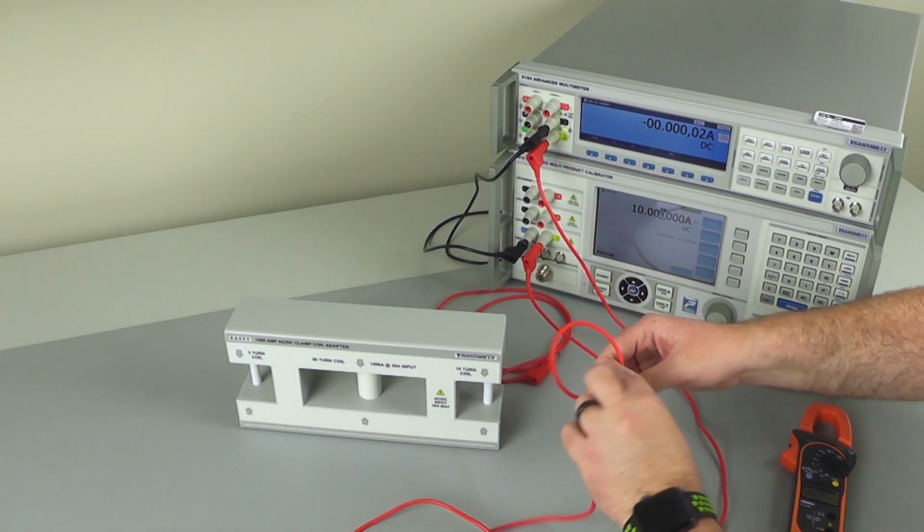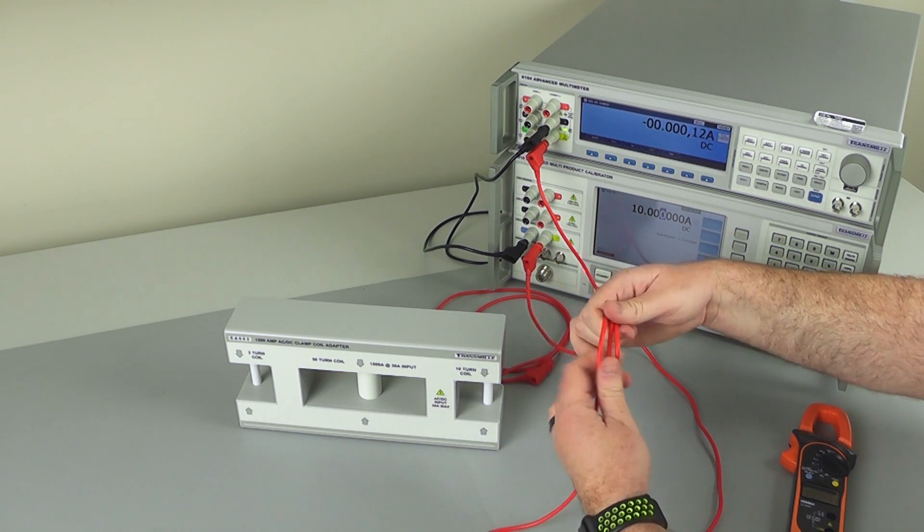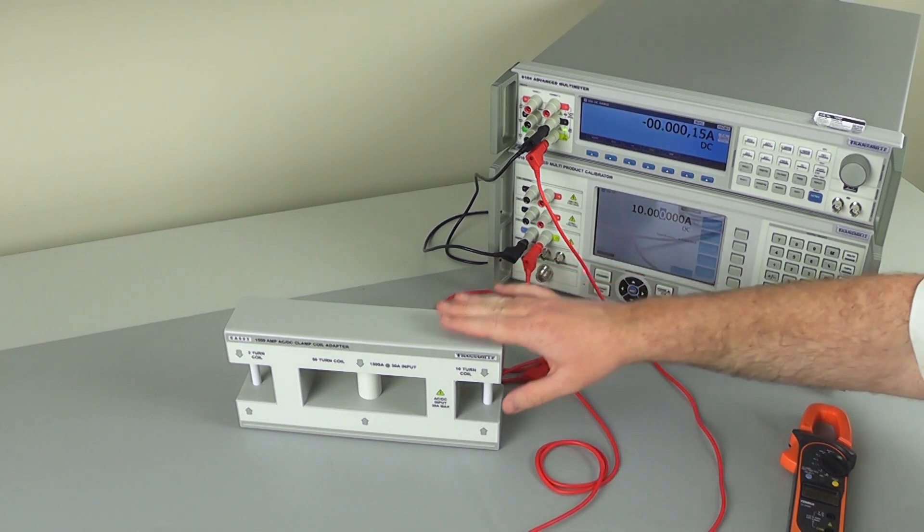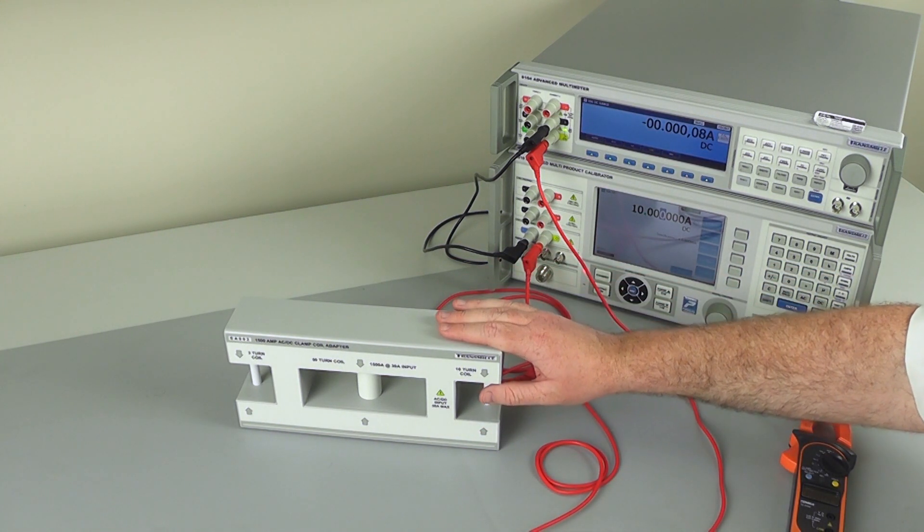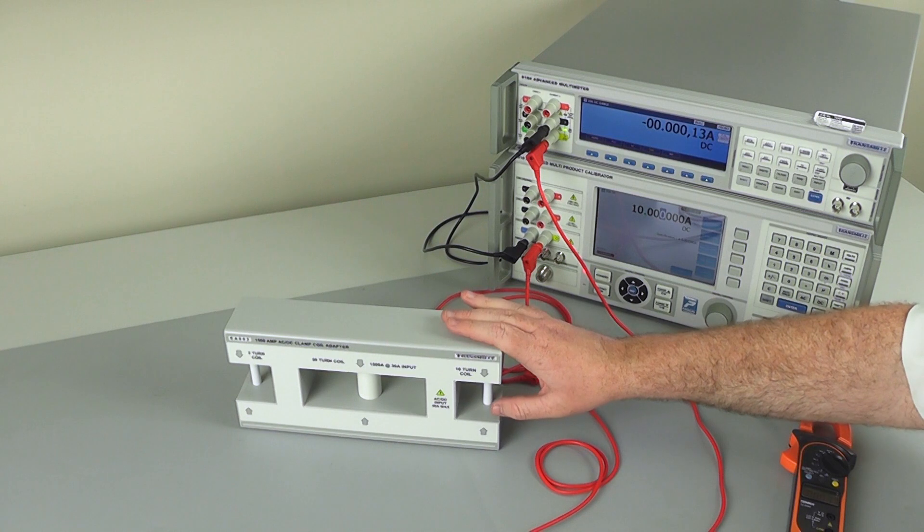It was quite easy to verify how many turns of wire we had because we could count them. We've physically wound these with our own hands. When verifying a clamp coil adapter that is either sealed or has a large number of turns, so for example, 50, counting is not as practical anymore.